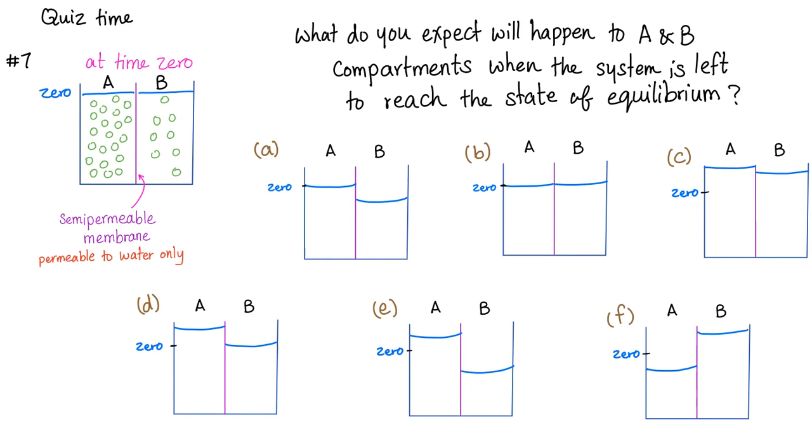First, let me start by answering the questions from the previous video. Here's the first question. You have compartment A and compartment B with the semipermeable membrane in between. If you wait, what's going to happen? Of course, water will flow from low concentration of solute to high concentration of solute, making A the correct answer.